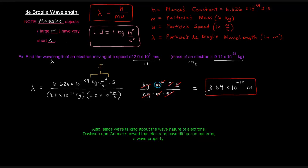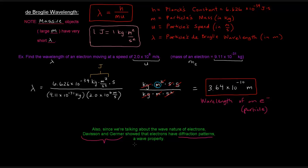This is the de Broglie wavelength of an electron moving at that speed — the wavelength of a particle, which is a weird concept since particles are behaving as waves. Also, scientists Davisson and Germer showed that electrons have diffraction patterns, which is a wave property — particles don't typically show diffraction. This confirms that electrons have a wave nature, and we can find their wavelength using this equation.